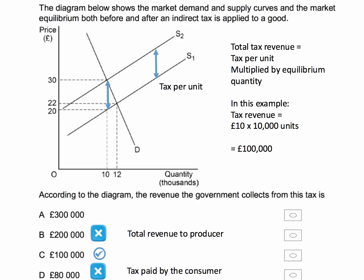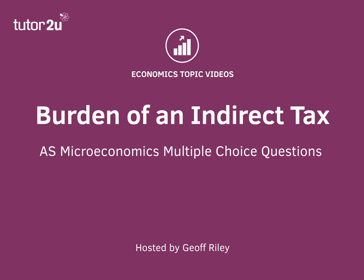The correct answer is C — £100,000 — because the tax per unit is £10 and 10,000 units are bought and sold in equilibrium. There we go, that's a tricky little question on the burden of an indirect tax.